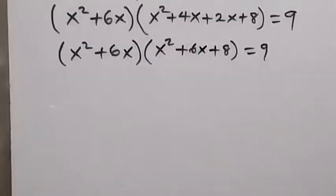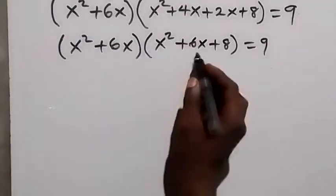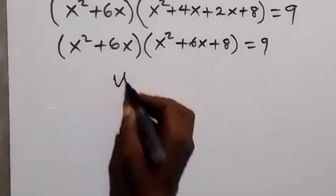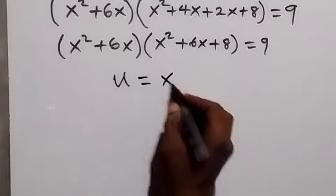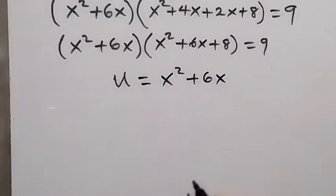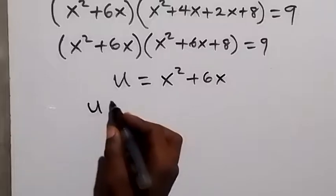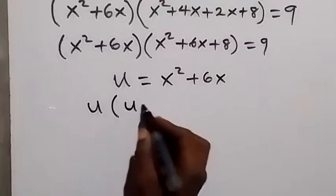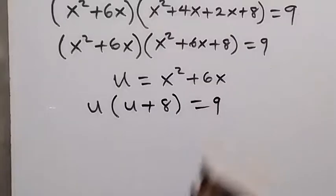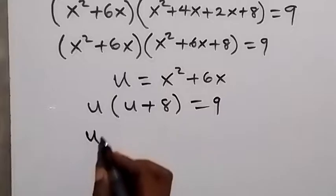In the next step, we have x squared plus 6x. When we write this in terms of u, this will become u multiplied by u plus 8, which equals 9.